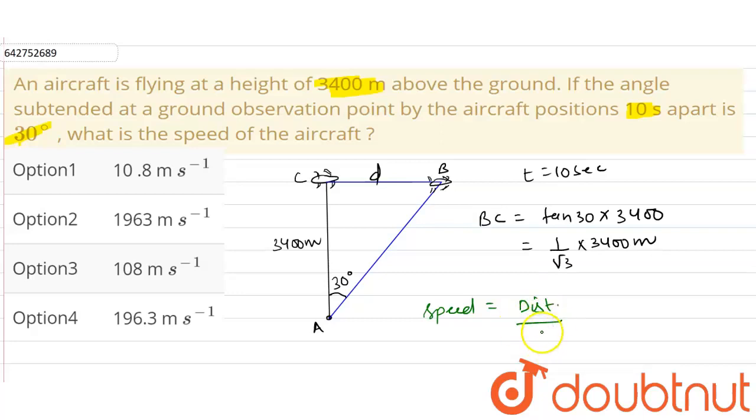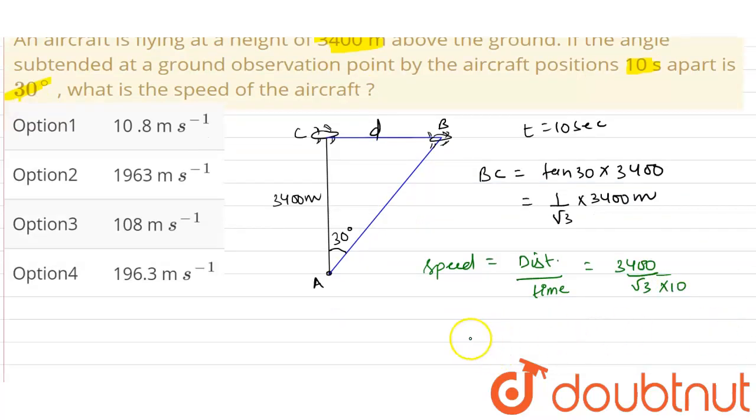So the speed of the aircraft will be distance upon time. The distance it covers is 3400 divided by root 3 meters, and the time is 10 seconds, so V will be